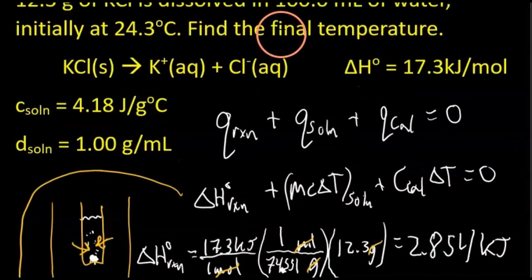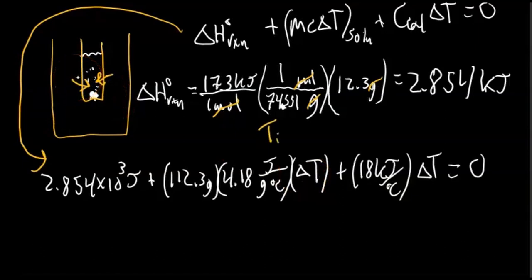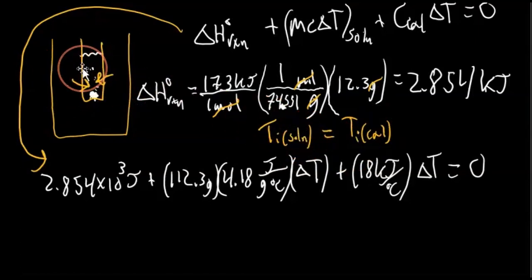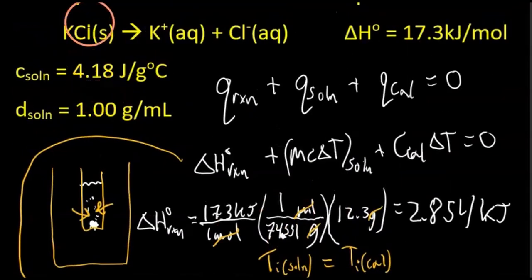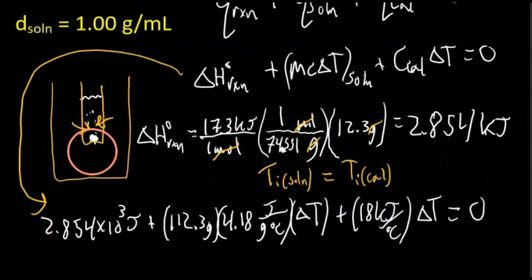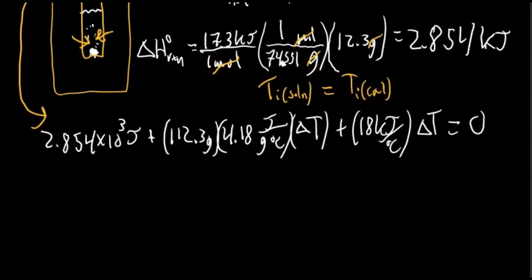We'll solve for the change in temperature first, then find the final temperature. Note that the change in temperature for the solution equals the change in temperature for the calorimeter. Initially the solution is just water at 24.3 degrees Celsius, and the calorimeter must be in thermal equilibrium with it at the same temperature — otherwise there'd be heat transfer before we even add the KCl. So both have the same initial temperature, and both reach the same final temperature.